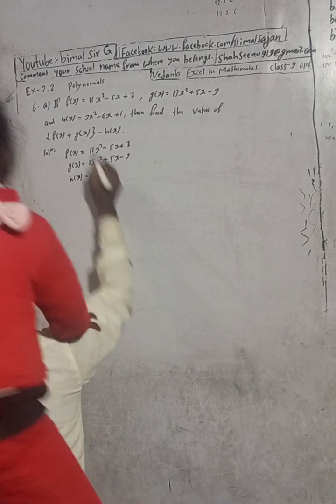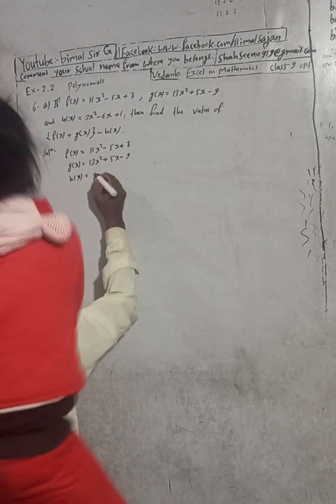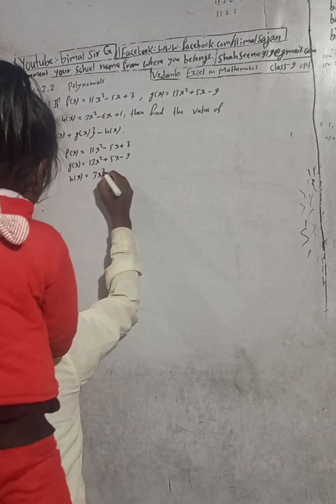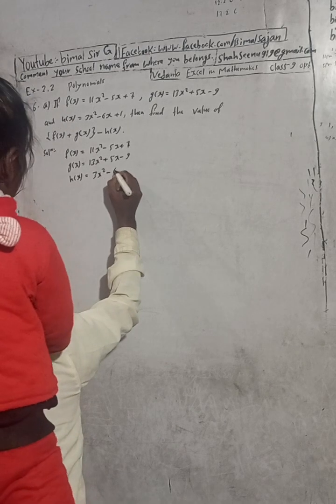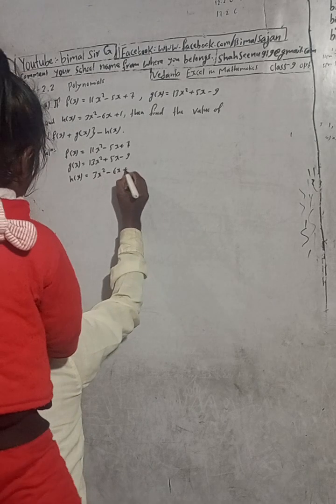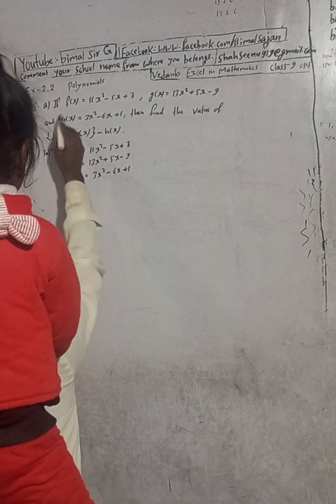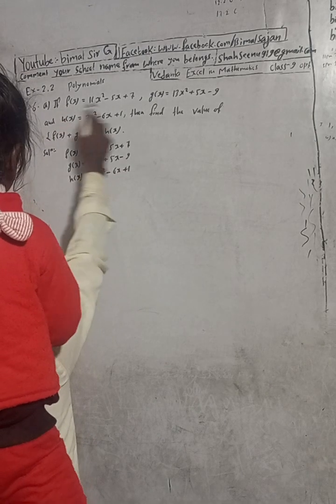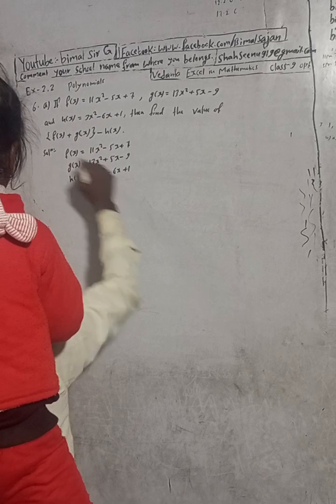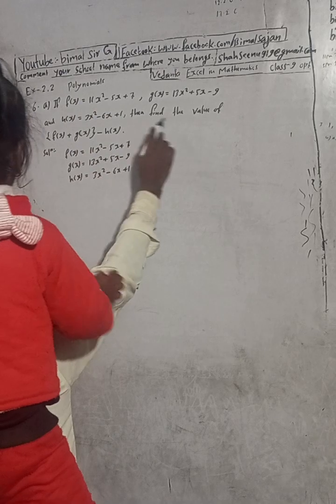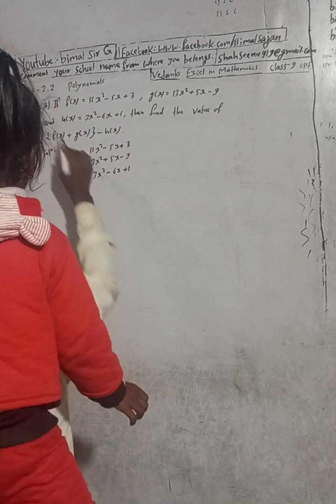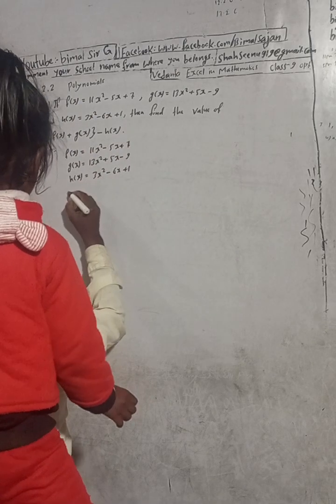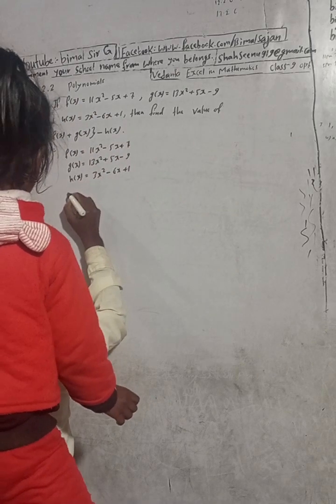And we also have x² minus 6x plus 1. Now we have to find the value of this expression.